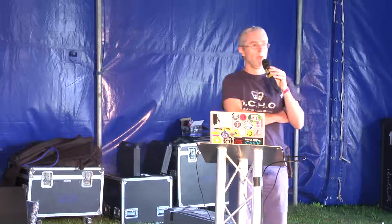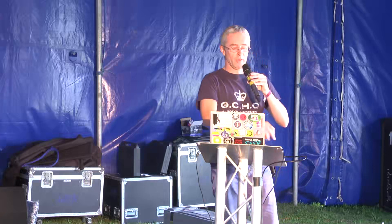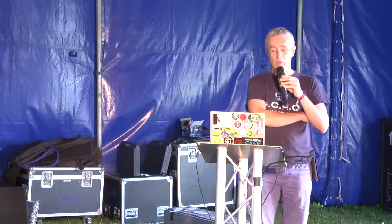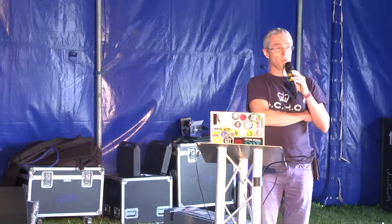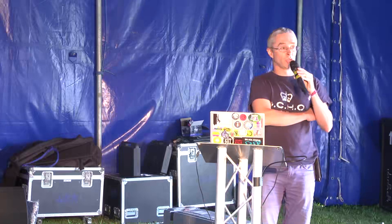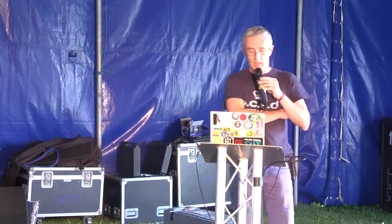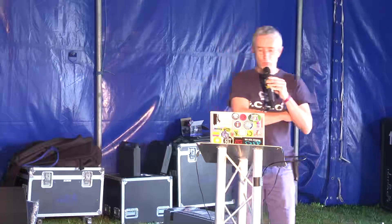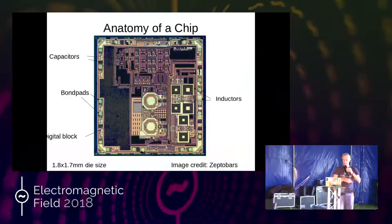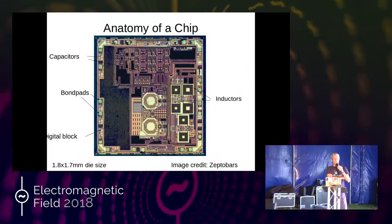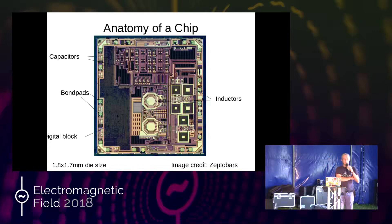If you looked at a chip, what would you find? Around the edge of the chip you'll see a pad ring with little bond pads. These allow you to bring out bond wires to a chip package or circuit board — to bring in power and bring out signals. This is an RF chip where quite prominent are inductors in the middle and to the right, fabricated on the metal layers, and there's also a digital block on the left.